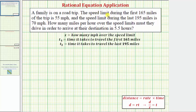A family is on a road trip. The speed limit during the first 165 miles of the trip is 55 miles per hour, and the speed limit during the last 195 miles is 70 miles per hour. How many miles per hour over the speed limits must they drive in order to arrive at their destination in 5.5 hours?